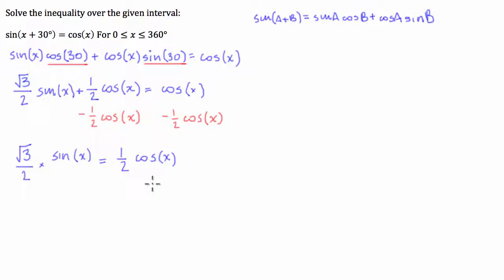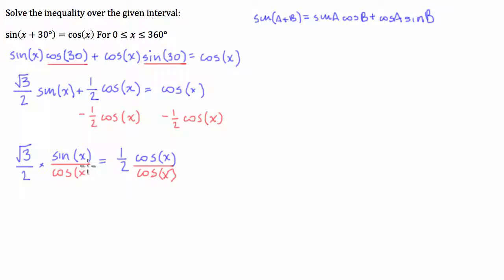Now I'm going to take the cosine of x over to this side and the fraction over to the right-hand side. The reason for this will become clear in a second. I'm going to divide both sides by cosine of x — that cancels the cosine out on the right-hand side. Then to move the fraction, I'm going to multiply both sides by its reciprocal.